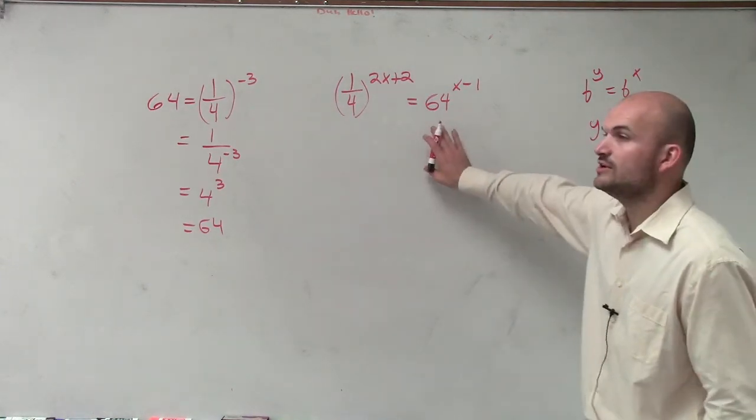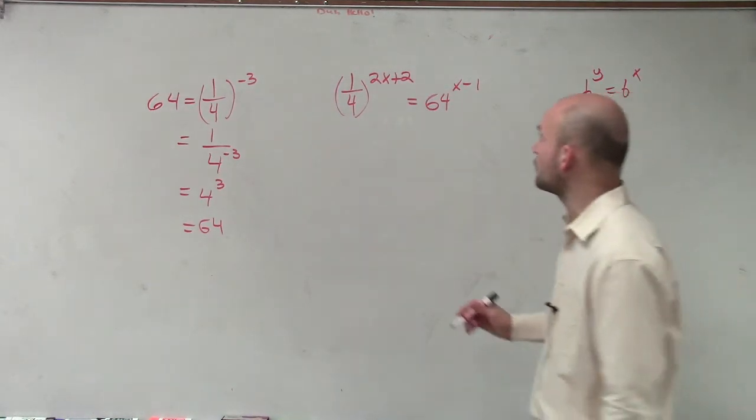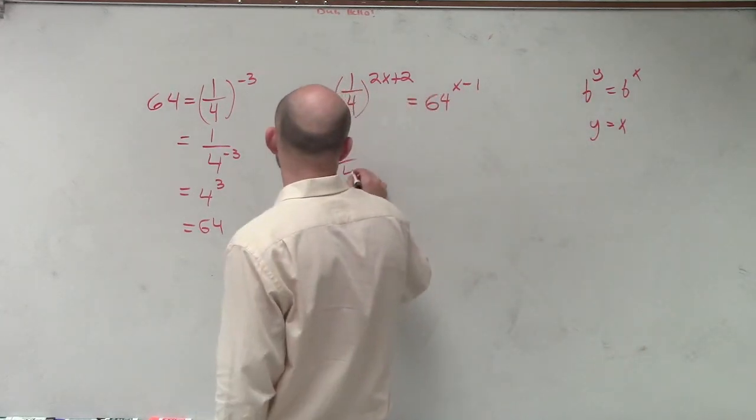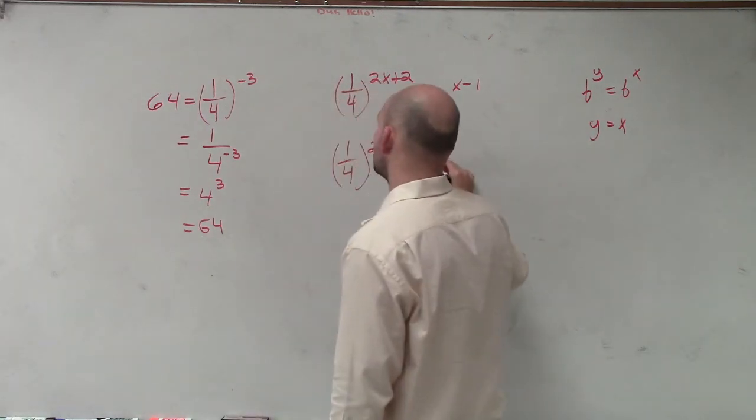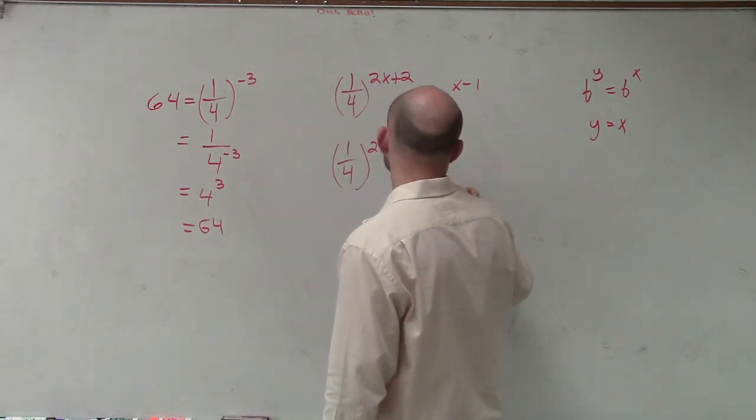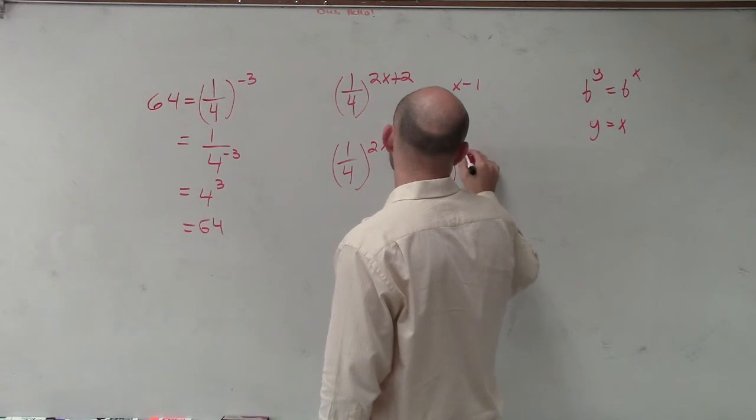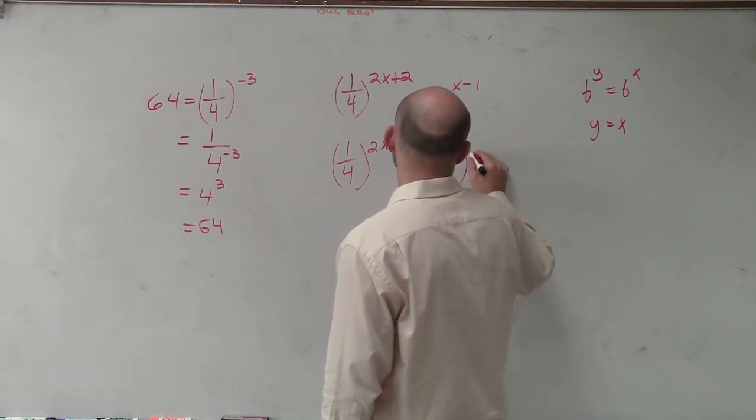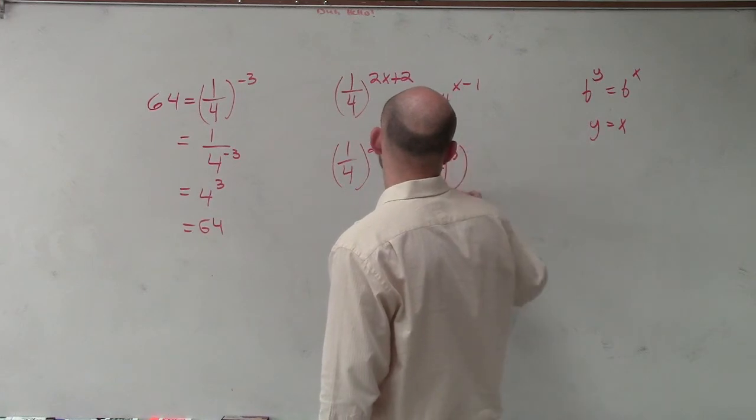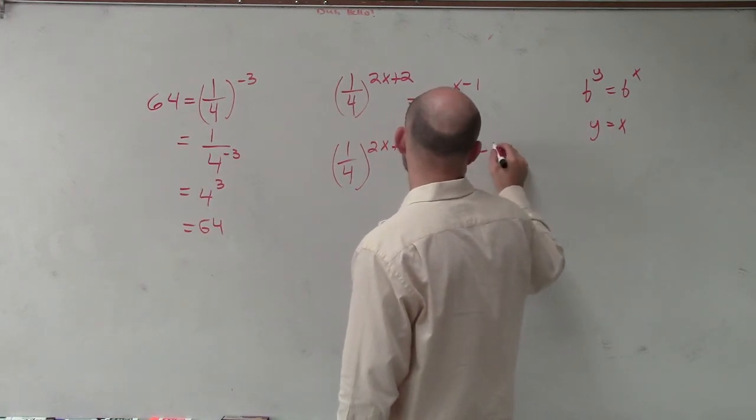So therefore, I can rewrite my 64 as 1 over 4 to the negative 3 power. So then I have 1 fourth to the 2x plus 2 equals 1 fourth raised to the negative third, times x minus 1.